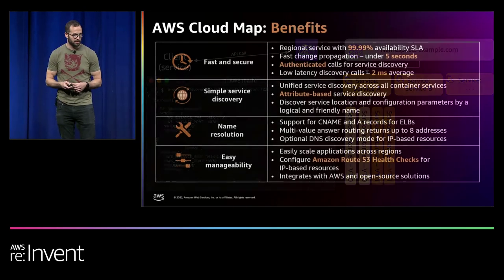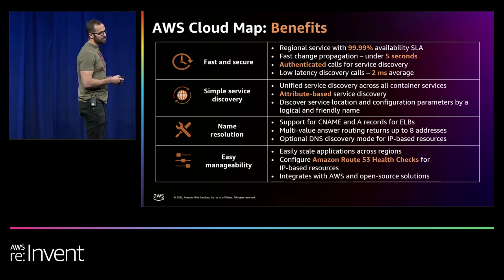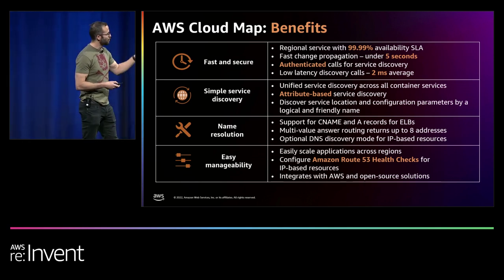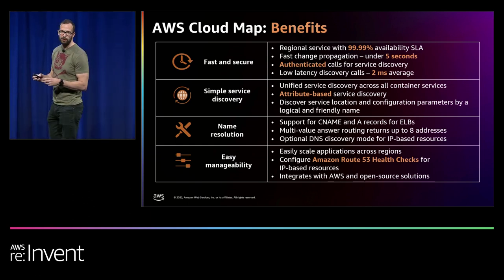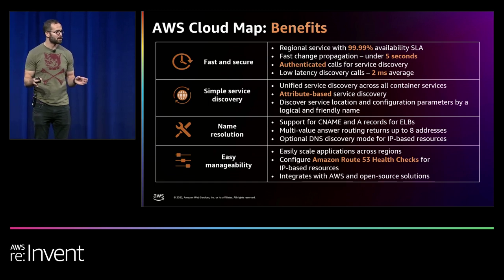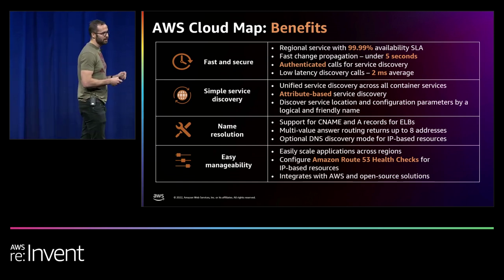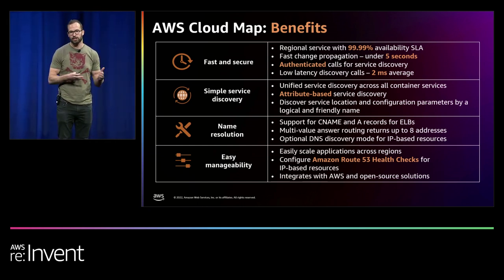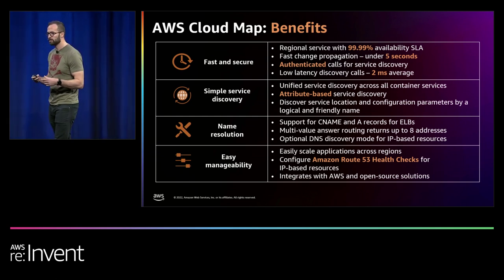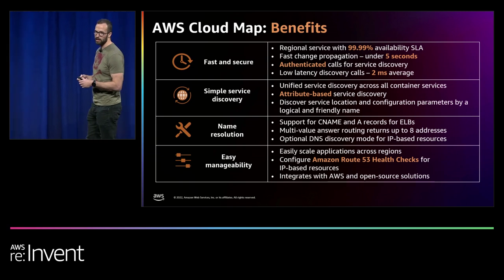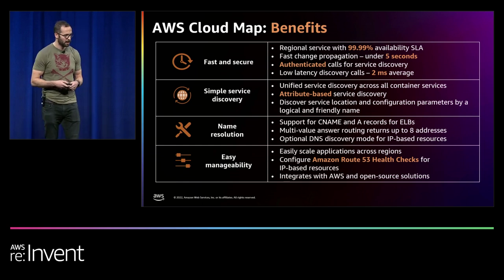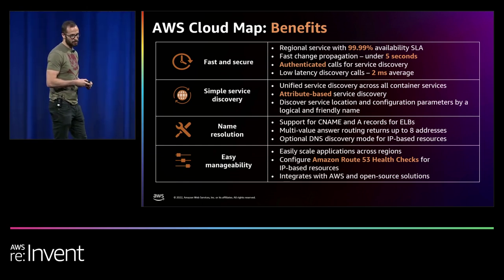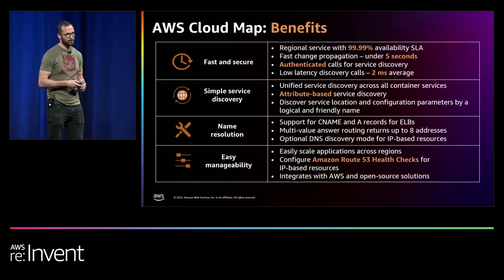How does Cloud Map differ from DNS? The big one is the ability to include custom attributes — you can include whatever information you want when you register a service. The second benefit is that with DNS, there's caching, and changes might not take effect until the TTL expires. With Cloud Map, you're using APIs, so changes propagate really fast — within five seconds, you can make changes.